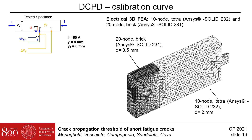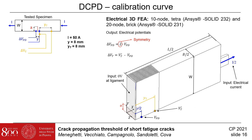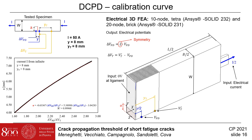To derive the calibration curve, a 3D electrical finite element analysis has been carried out using 10-node tetrahedral and 20-node brick solid elements with an element size of 0.5 mm in the cracked region. One quarter of the geometry has been considered. A zero-volt electrical potential has been applied to the uncracked portion of the net section and the current to the specimen ends. Several finite element analyses have been performed by modeling a crack of depth A from the notch tip and evaluating the potential drops delta VPD and delta VT. The figure reports the results in terms of crack length A as a function of the ratio delta VPD over delta VT and the fitted calibration curve.